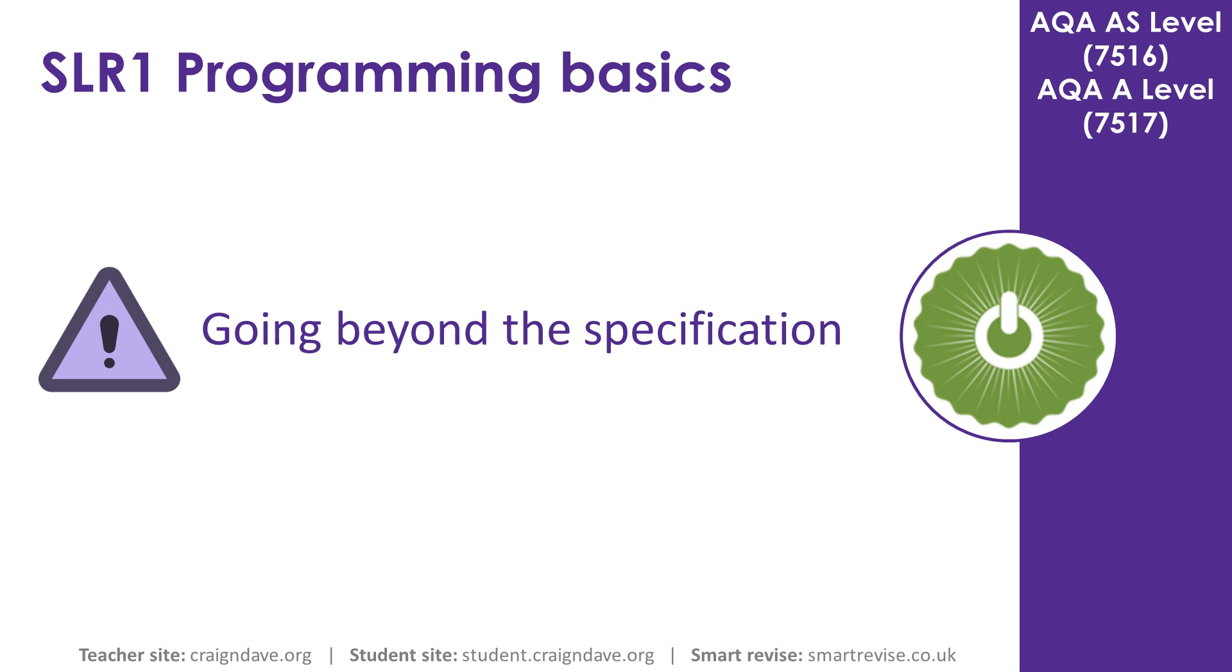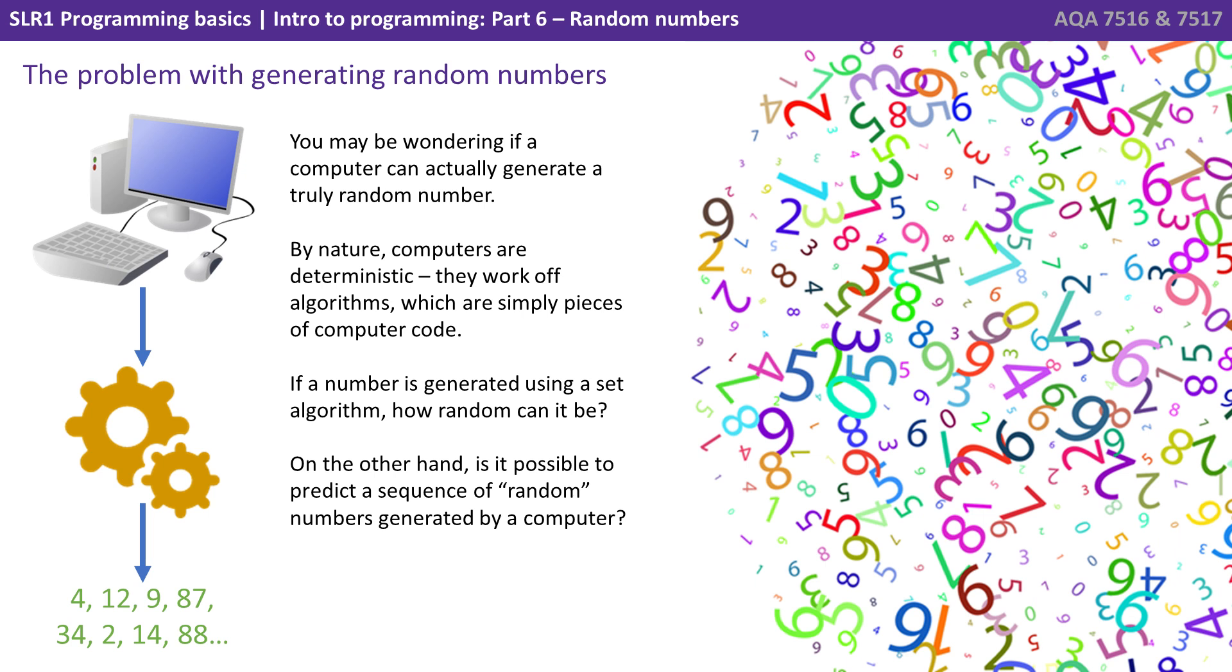But if you want to know a little bit more about how random numbers are truly being generated by a deterministic machine, stay listening to Beyond the Specs section. You may be wondering if a computer can actually generate a truly random number. By nature, computers are deterministic. They work off algorithms, which are simply pieces of computer code.